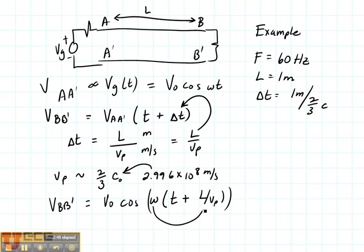The phase delay is omega L over the velocity of propagation. So omega L over the velocity of propagation in this case is going to be 0.1234512. That's really small.